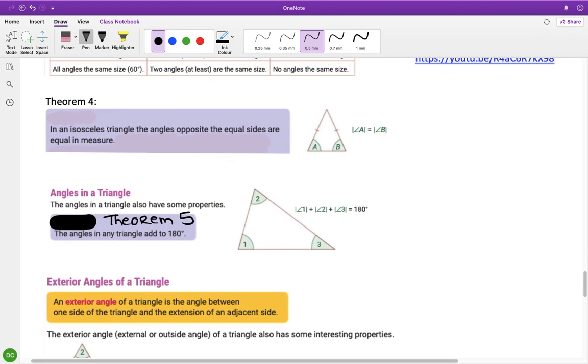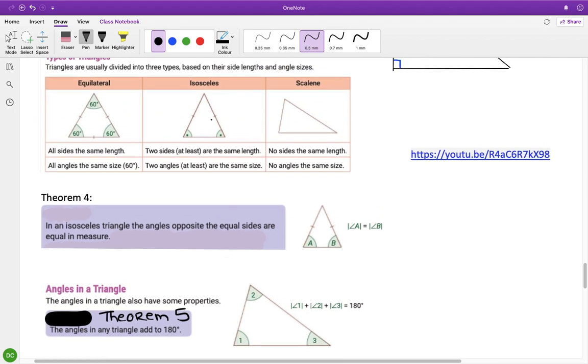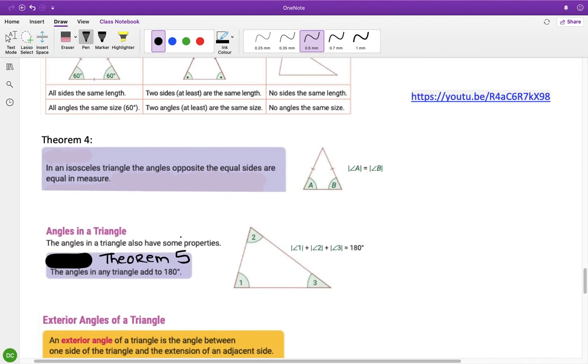So theorem four is in an isosceles triangle, and if you remember an isosceles is one where you have two sides the same and two angles the same. The angles opposite the equal sides are equal in measure. I talked about that briefly the other day, but wherever your two equal sides are, the opposite angles are also equal. So no matter what way you rotate the triangle, if you draw an arrow from your equal side to the opposite angle, and from the other equal side to the opposite angle, those angles are equal.